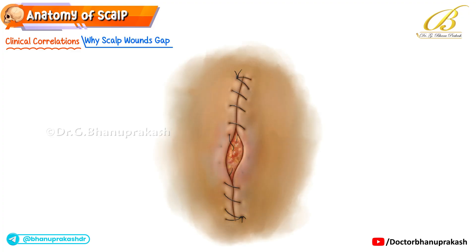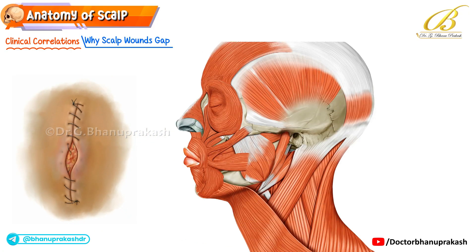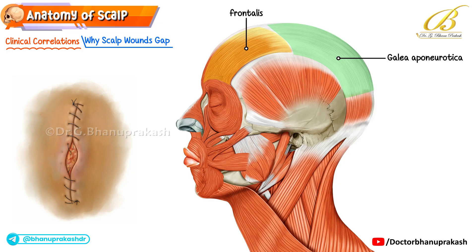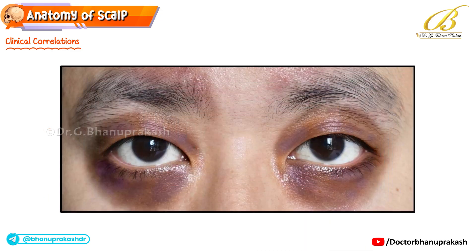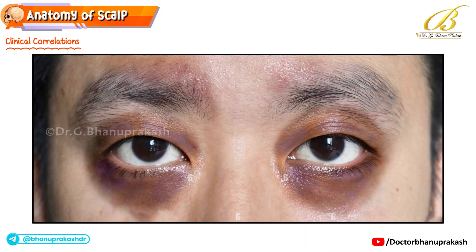Next, why do scalp wounds gape open? This happens when a cut involves the galea aponeurotica. The frontalis muscle pulls upward, the occipitalis pulls backward, and together they drag the wound edges apart.